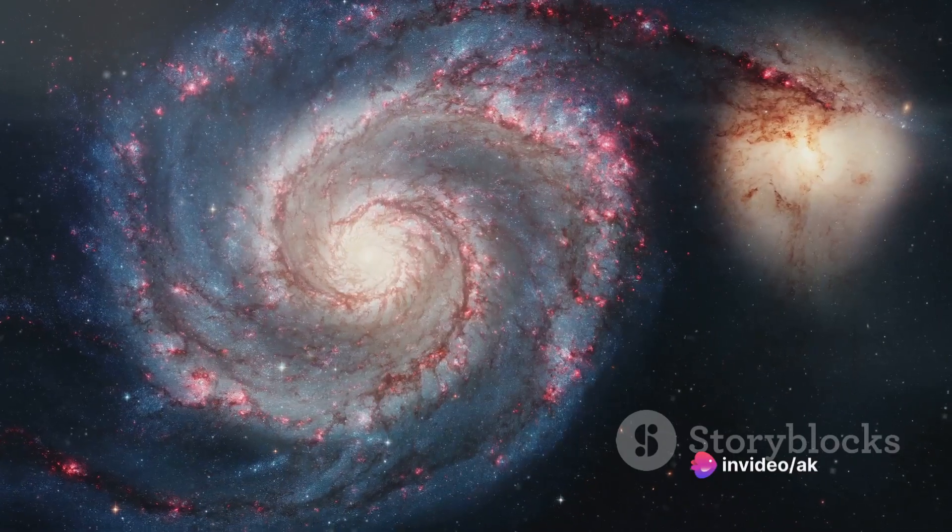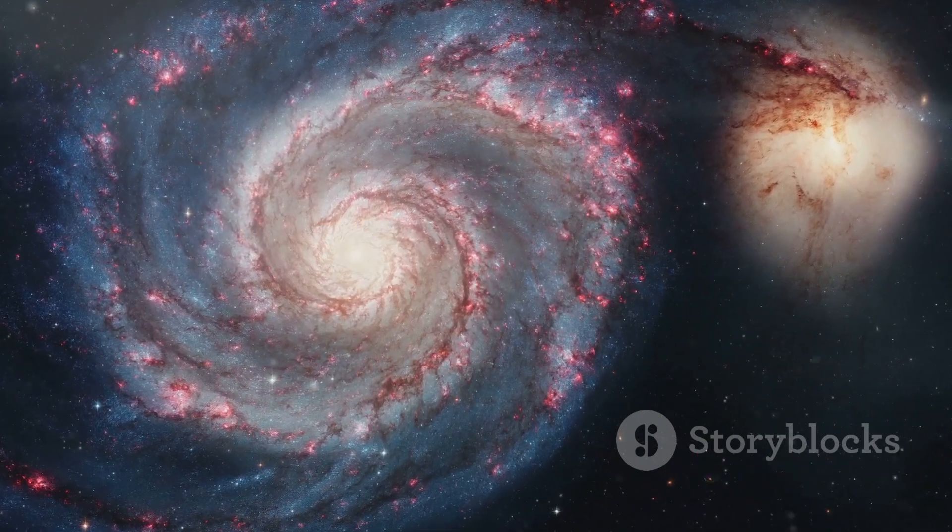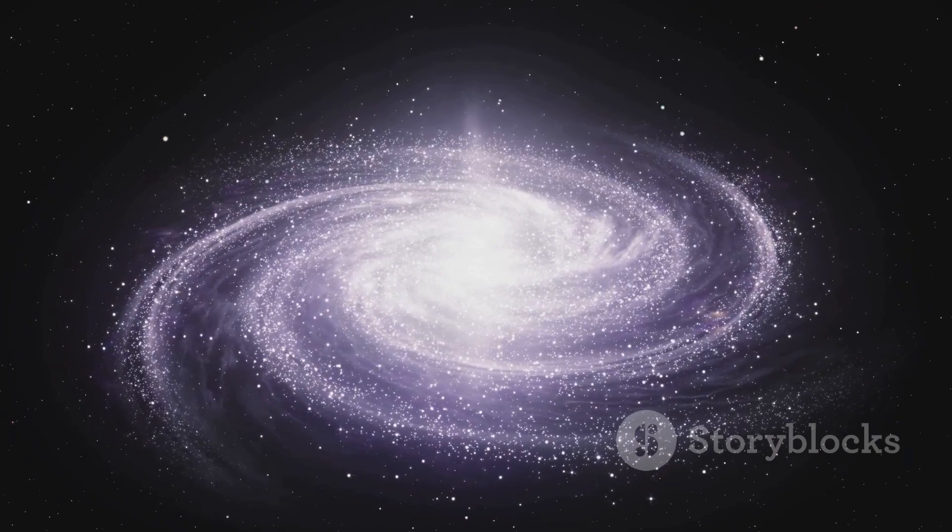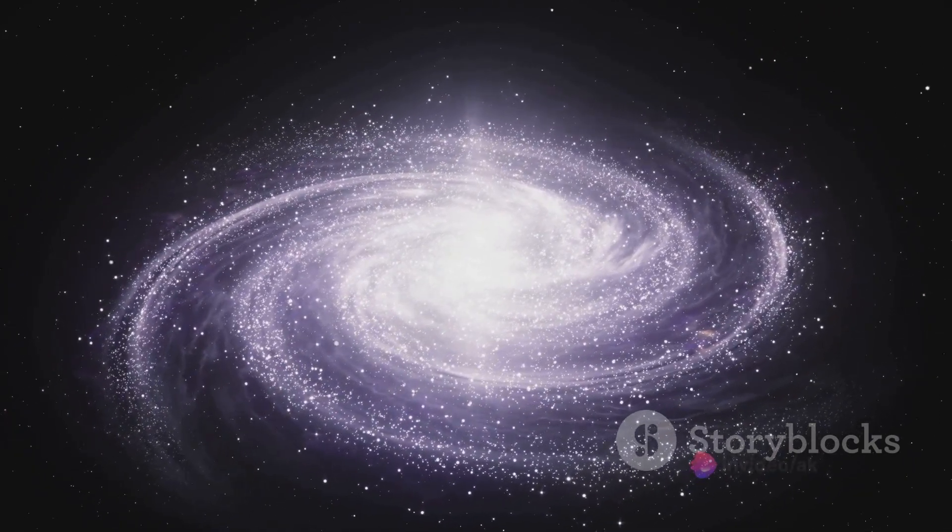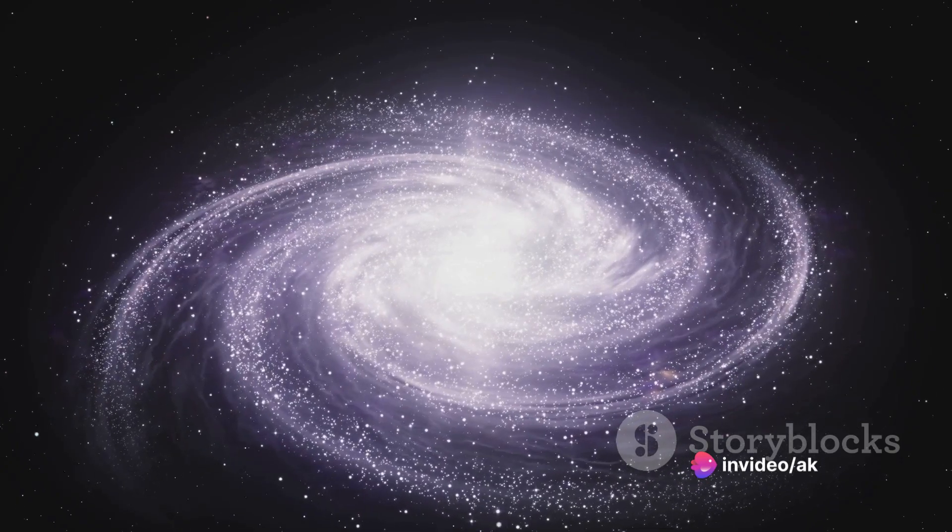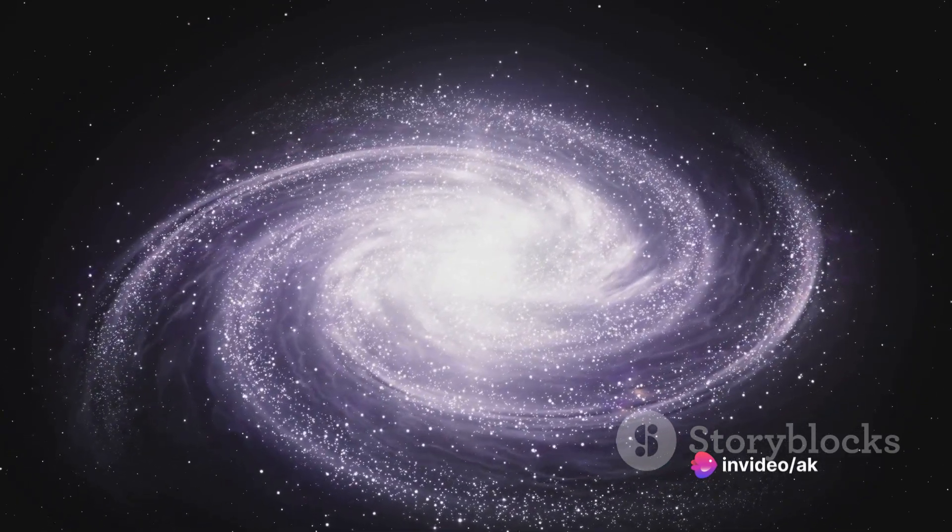As the dance continues, both the Milky Way and Andromeda galaxies will gradually lose their spiral structure. Over time, they will merge to form a larger, elliptical galaxy. It's a transformation that will redefine our cosmic neighborhood.